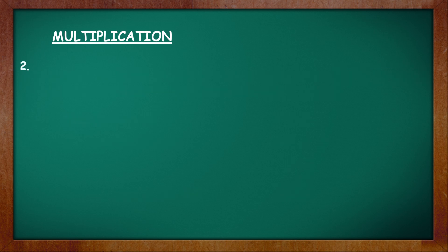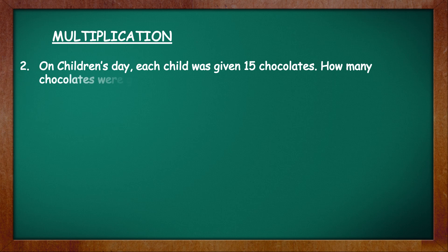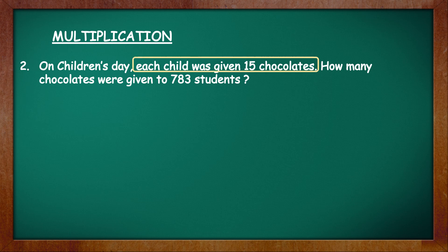Second question. On Children's Day, each child was given 15 chocolates. How many chocolates were given to 783 students? Here, we know the number of chocolates given to each student and we have to find the number of chocolates given to 783 students. To find that, we have to multiply the number of students by the number of chocolates given to each student, that is 783 into 15.